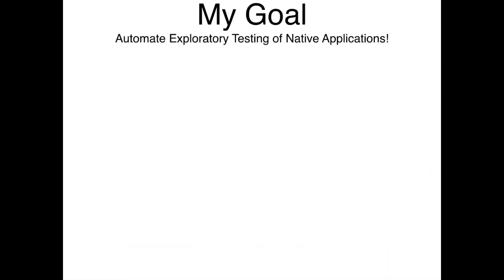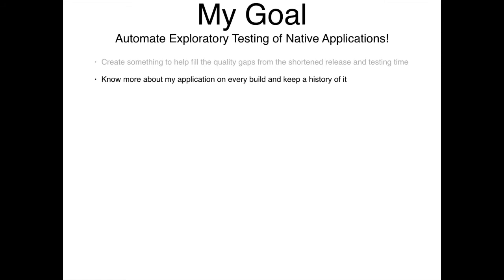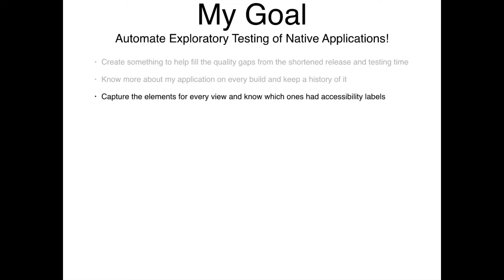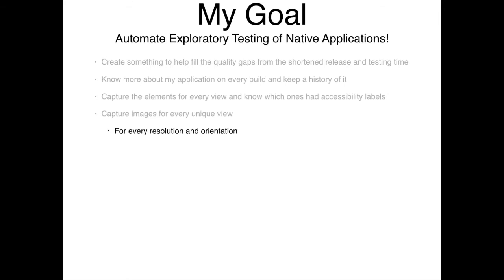My goal was to automate the best I could exploratory testing of native mobile applications — to help fill the quality gaps of this shortened release and testing time. I wanted to know more about my application on every single build and store a history of that information. I wanted to capture all elements on all different views, know which elements had accessibility labels, and capture all unique images and views for every resolution and orientation supported.